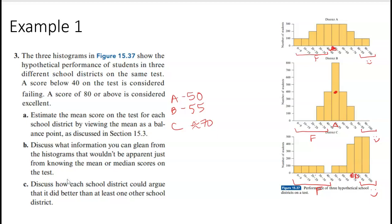Discuss what information you can glean from the histograms that wouldn't be apparent just from knowing the mean or the median. I can look at the data distribution, the way the data is kind of moving out. For B, I could say we don't have a lot of failures, right? I wouldn't know that from the mean, but from here I could see that B has very few failures.